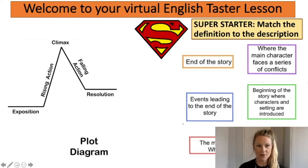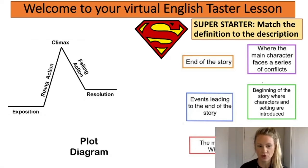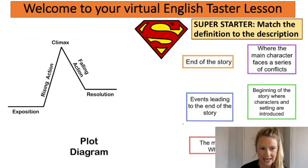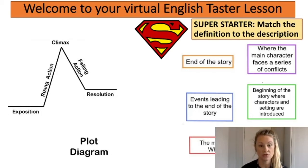Okay so hopefully you've got your pen and your paper now. We're going to start with a super starter and I would like you to have a look at the diagram on the left where you've got five key points plotted against a diagram. You'll see exposition, rising action, climax, falling action and the resolution. What I'd like you to start thinking about is what they mean. So this is the overall structure of a story — how might we explain each of those parts?